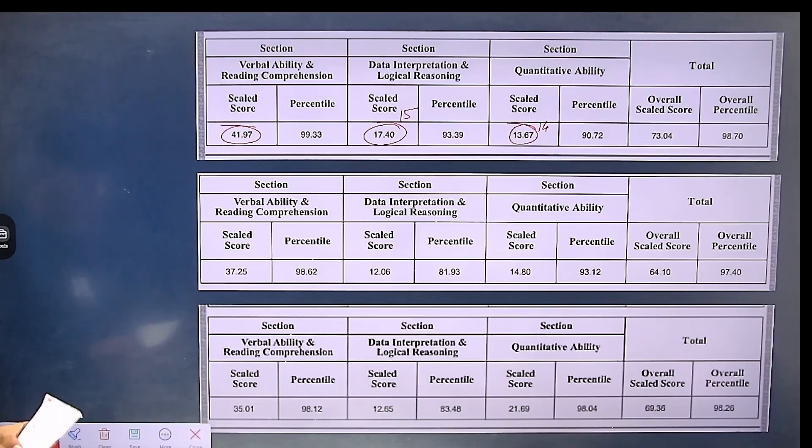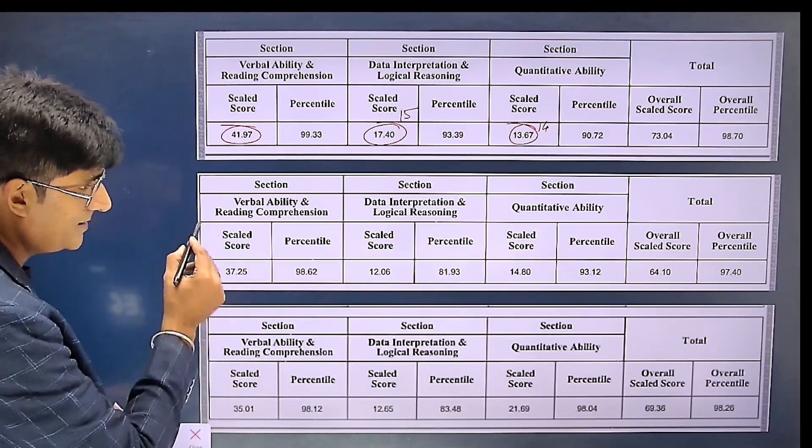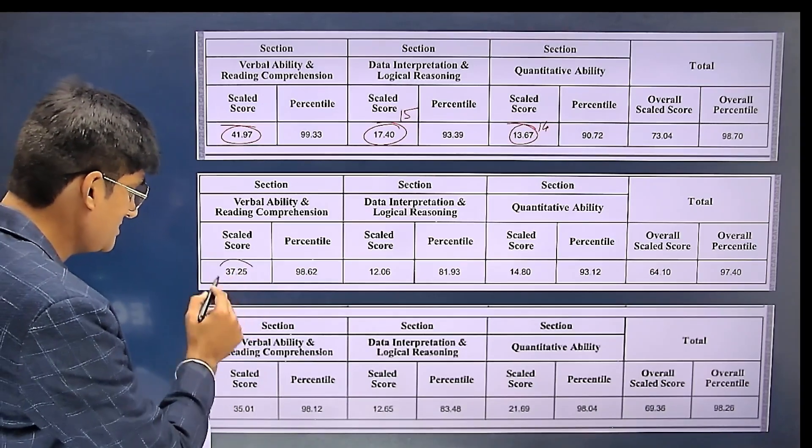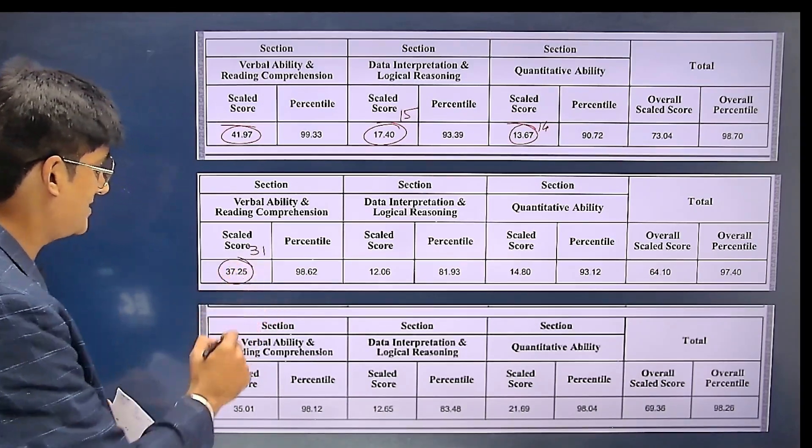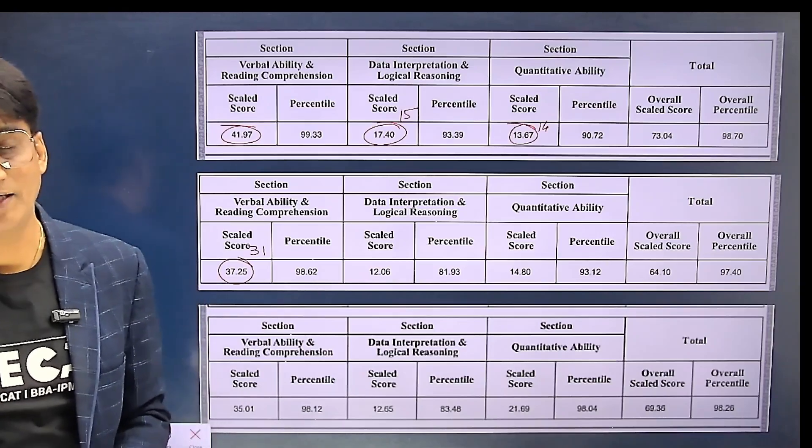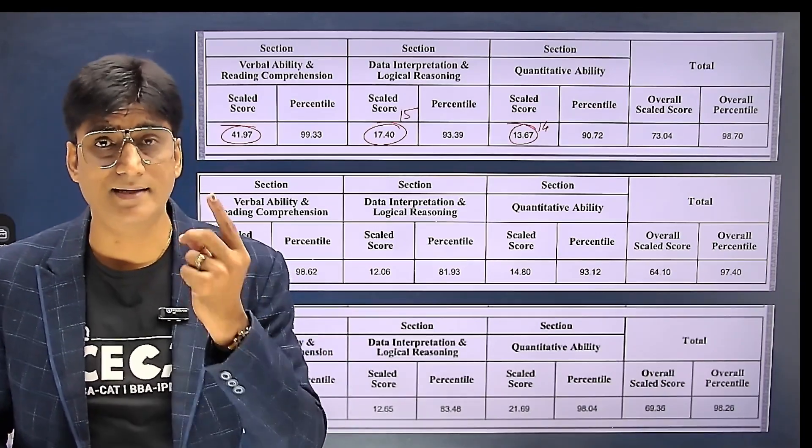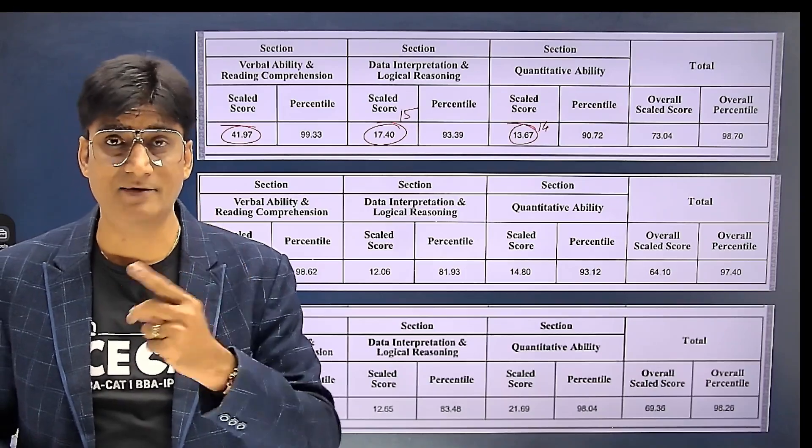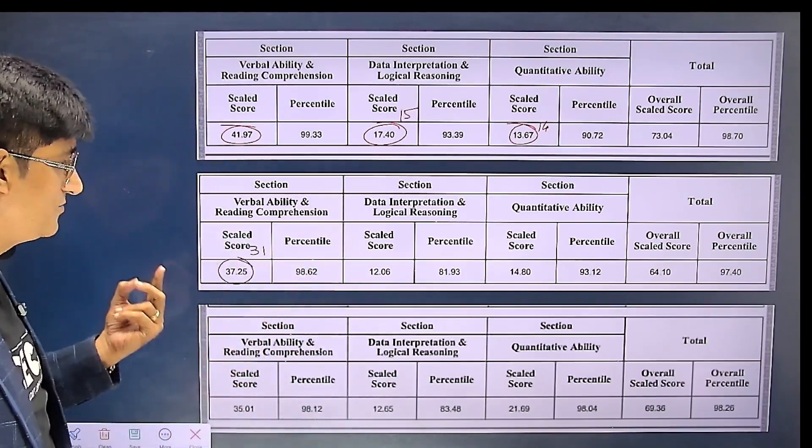If I talk about slot two, this girl's result from slot two - she was getting 31 in English which became 37.25. You people see, the most considerable scaling up in any section is English, where 31 became 37.25.